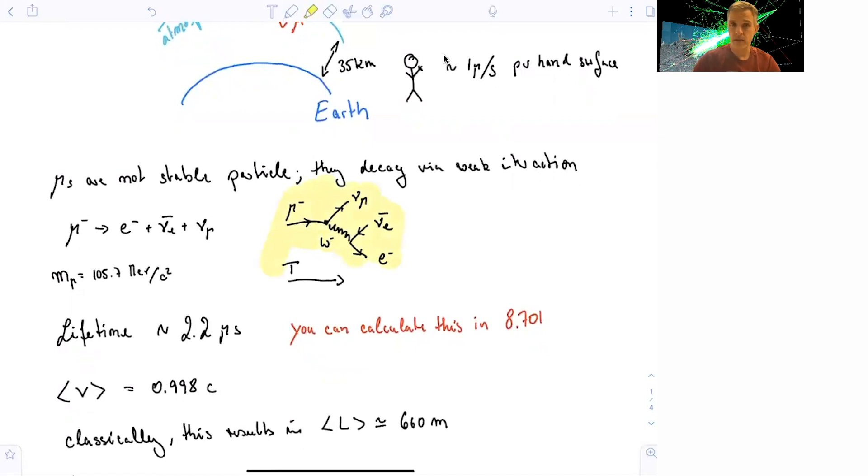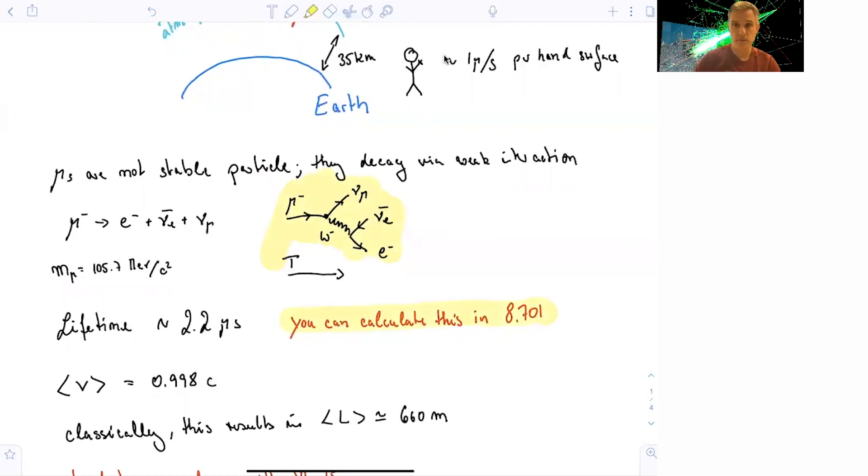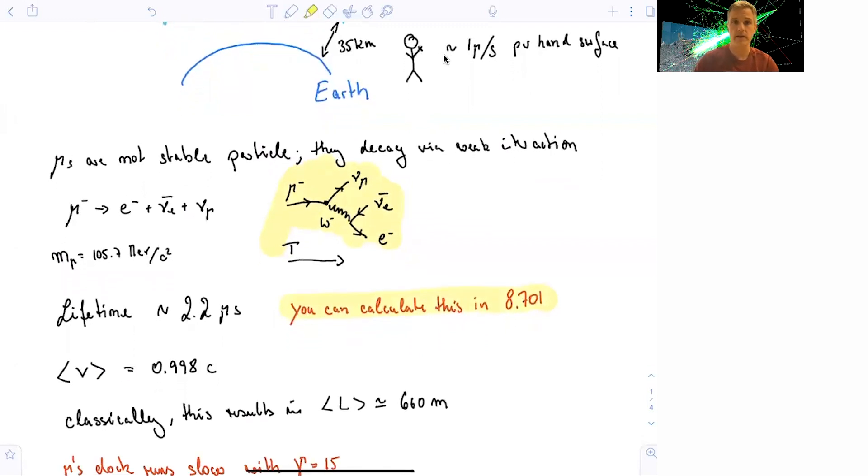The lifetime is about 2.2 microseconds, 2.2 times 10 to the minus 6 seconds. And I just taught 8701, which is an introductory class into particle and nuclear physics. The students calculated the lifetime of a muon in that class. So you can calculate this, and you need a few tools, but it's not that hard after all.